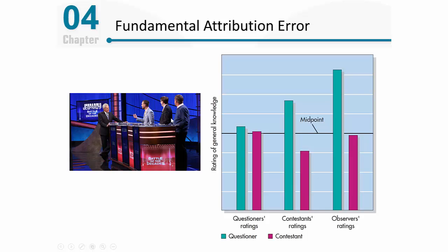Imagine we take that type of situation into the lab. We have three groups: questioners, who come up with questions they know the answers to — questions that are not easy to answer — giving them a huge advantage; contestants, who have to answer those questions; and outside observers who watch. Afterwards, everybody rates how intelligent they think the questioners and contestants are.